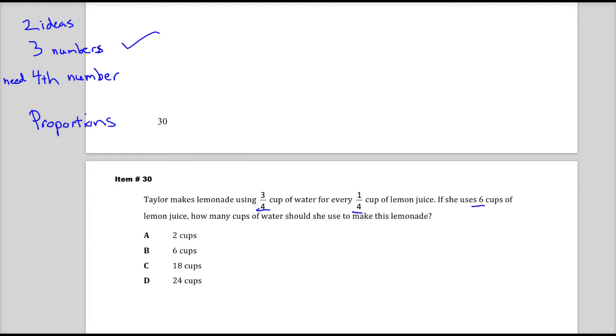Two ideas. It gets a little muggy in this one because they mention lemonade, they mention water, and they mention lemon juice. What I have to do to determine whether or not I can get two items and pull a proportion out is to look at the wording of the question. The question says if she uses 6 cups of lemon juice, how many cups of water does she use to make this lemonade? So really, Taylor makes lemonade using this and this. It doesn't really have anything to do with the lemonade. The lemonade is just kind of the window dressing of the problem.